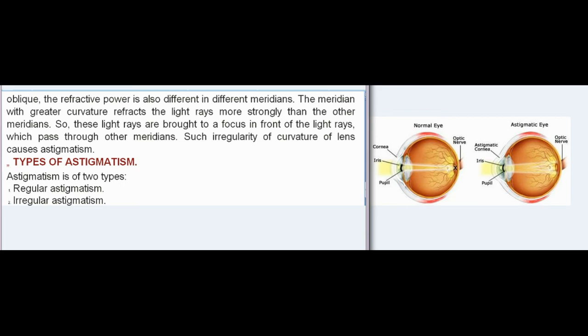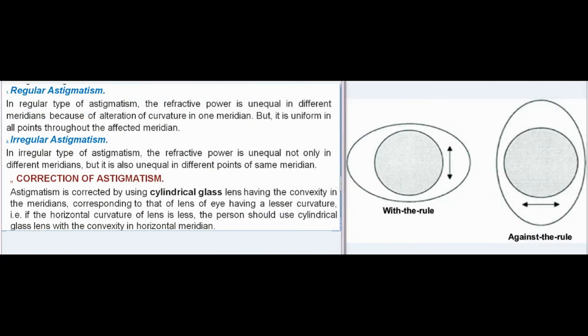Types of Astigmatism: Astigmatism is of two types: regular astigmatism and irregular astigmatism. In regular astigmatism, the refractive power is unequal in different meridians due to alteration of curvature in one meridian, but it is uniform at all points throughout the affected meridian. In irregular astigmatism, the refractive power is unequal not only in different meridians, but also at different points of the same meridian. Correction: Astigmatism is corrected by using a cylindrical glass lens having the convex axis in the meridian corresponding to that of the lens of the eye having lesser curvature — i.e., if the horizontal curvature of the lens is less, the person should use a cylindrical glass lens with the convex axis in the horizontal meridian.